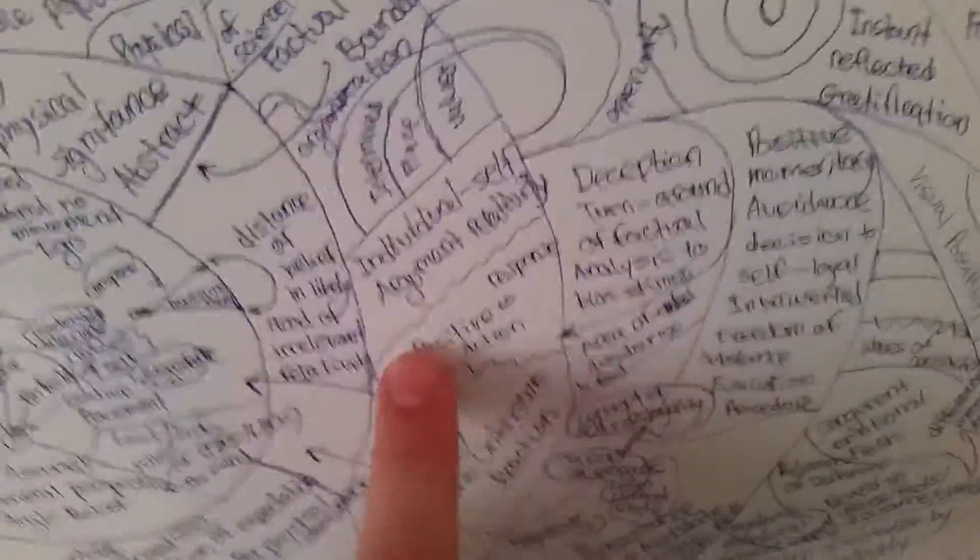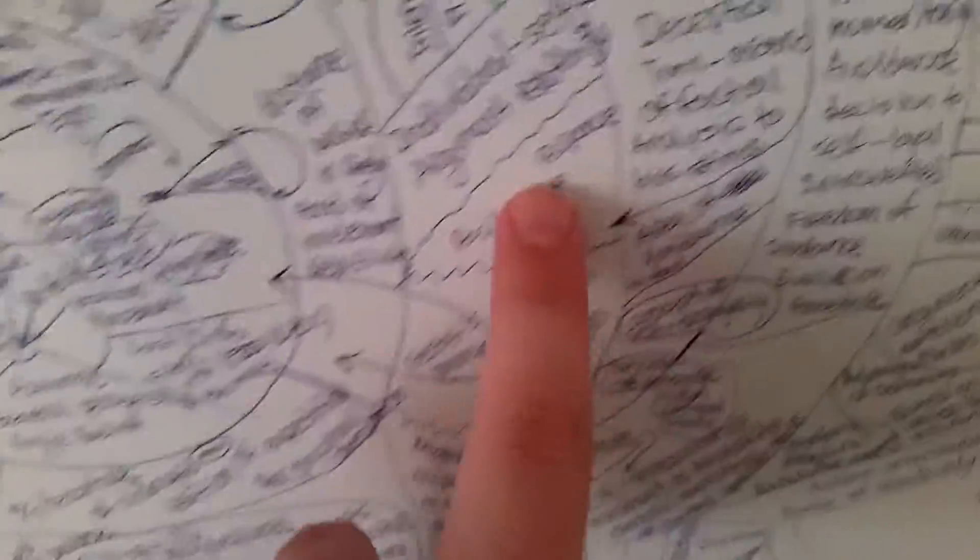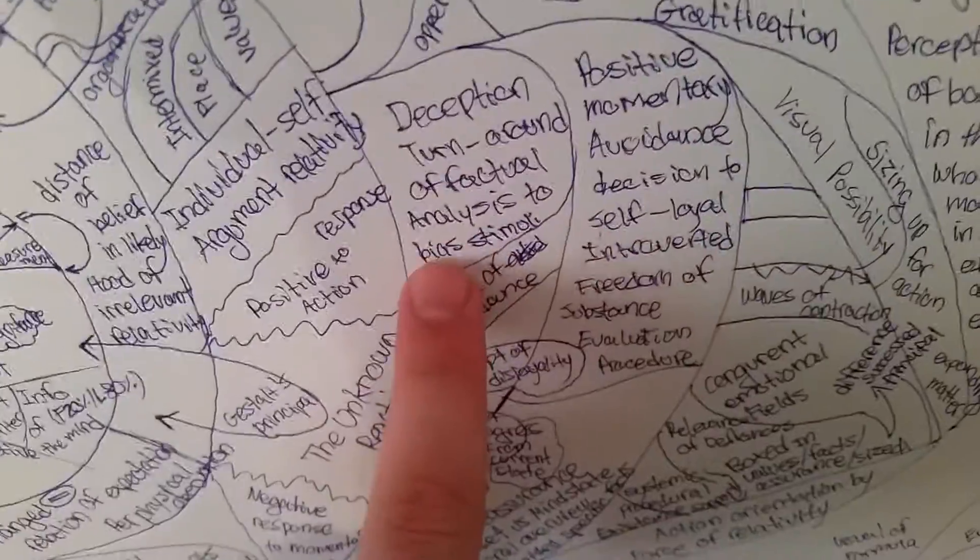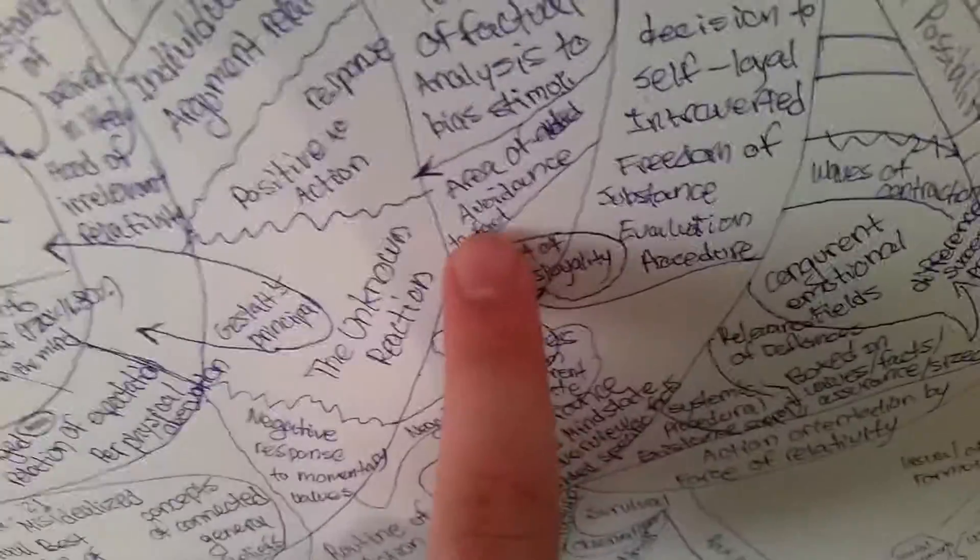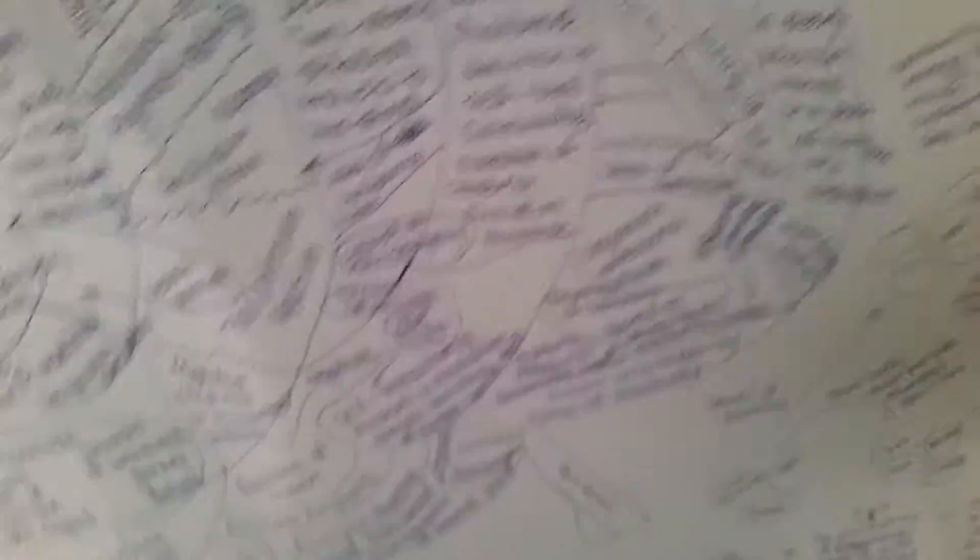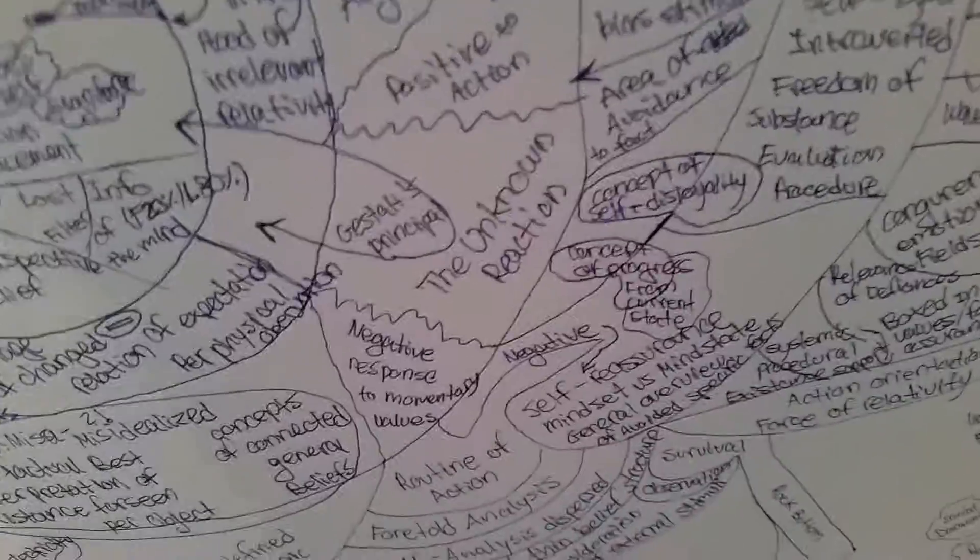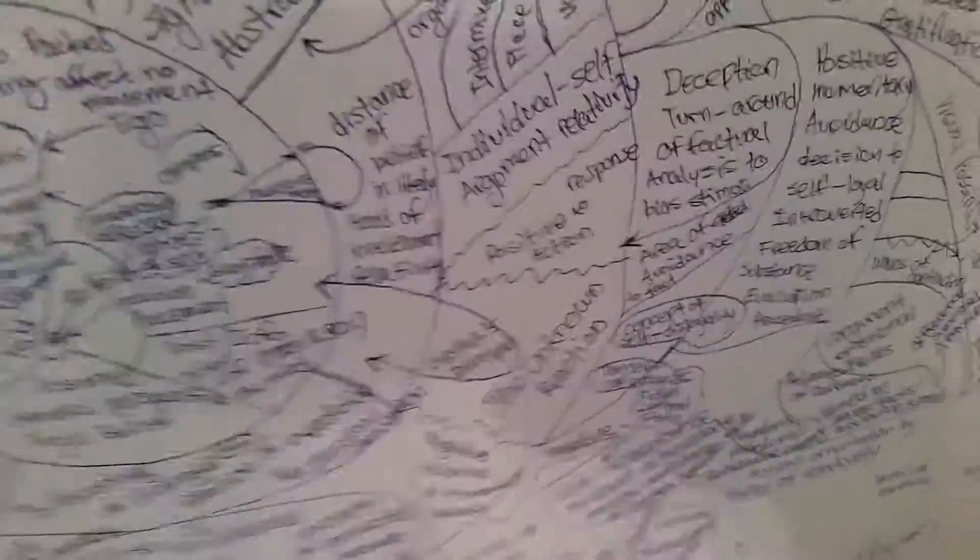Okay. Distance, likelihood of relativity, individual self, positive response to action. Okay, so a lot of people, you know, there is no right or wrong. There is negative responses and positive ones. So positive ones lead to deception, turnaround of factual analysis to buy stimuli, area of avoidance to fact, concept of self disloyalty, concepts of progress from current state. So the person leaves this current state so he's not loyal, but he's making progress. And also positive reinforcement and positive thinking also leads to unknown reactions, the Gestalt's principle.